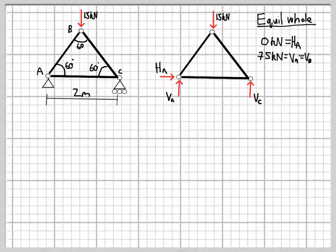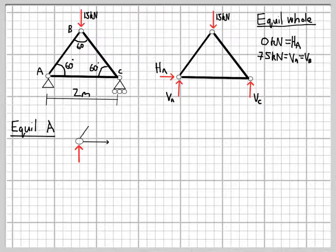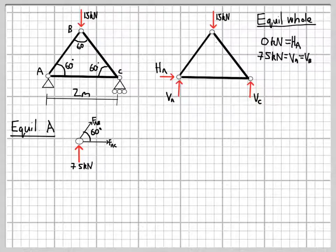With the support reactions known, we can now apply the method of joints to determine what the forces in the members themselves are. The method of joints looks at the equilibrium of each joint, that is where the members of a structure connect individually, and considers the equilibrium of the joint.